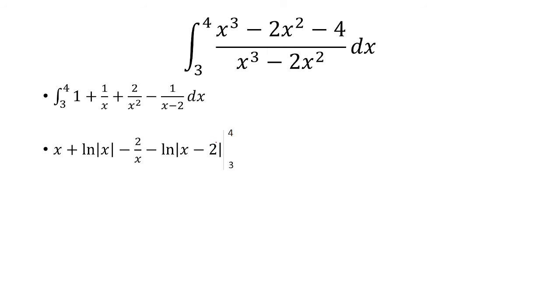Now I can integrate this fairly easy. So the antiderivative of 1 is x. 1 over x is ln of x. 2 over x squared is negative 2 over x. 1 over x minus 2 is ln x minus 2. And then the minus sign just drops down. And so we're going to evaluate this from 3 to 4.